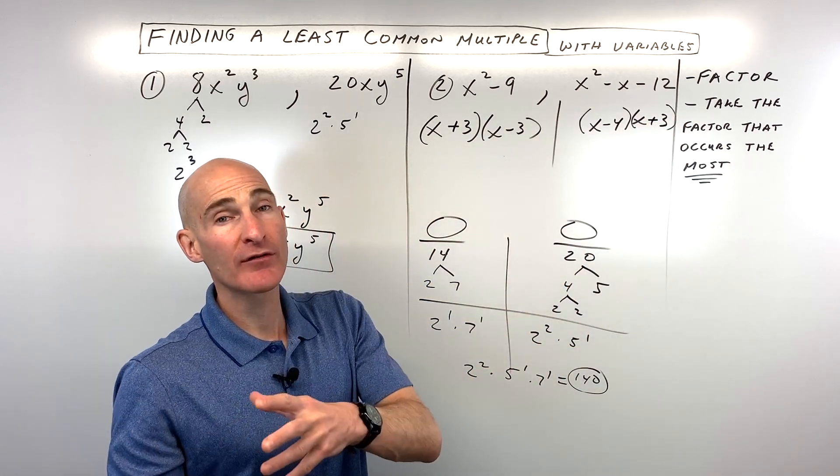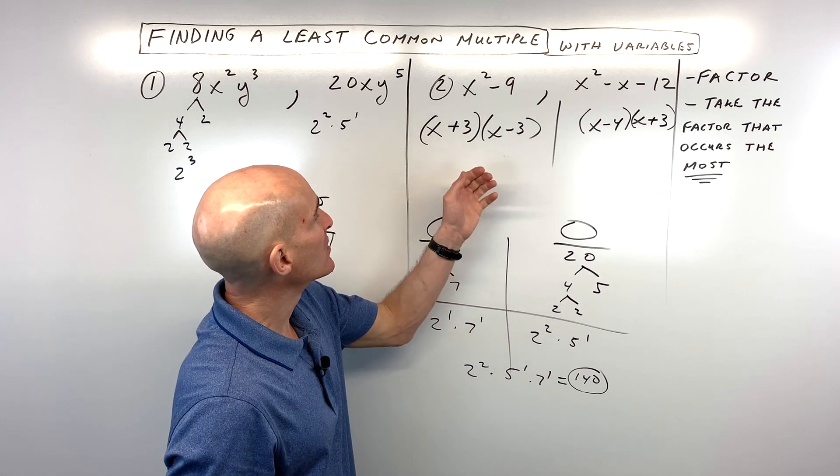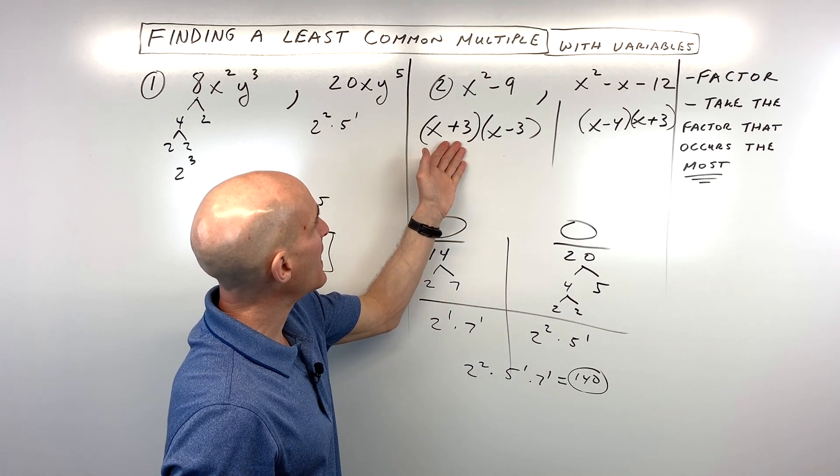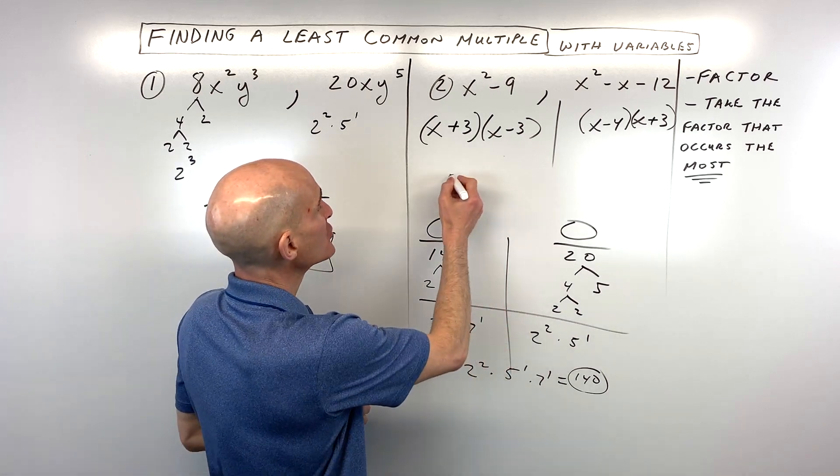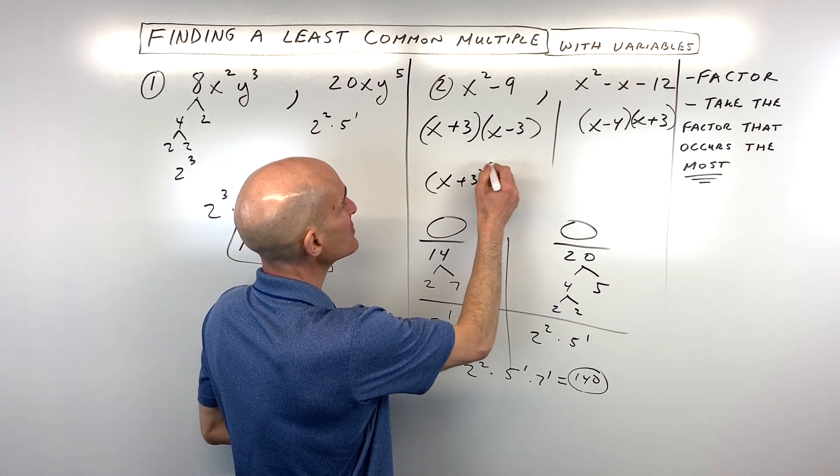Now here's where we want to take whatever occurs the most, right? So we can say, well, we've got 1 x plus 3, 1 x plus 3, it's a tie. What do you do in that situation? Well, you're just going to need one of those. So it's a tie for 1 there.